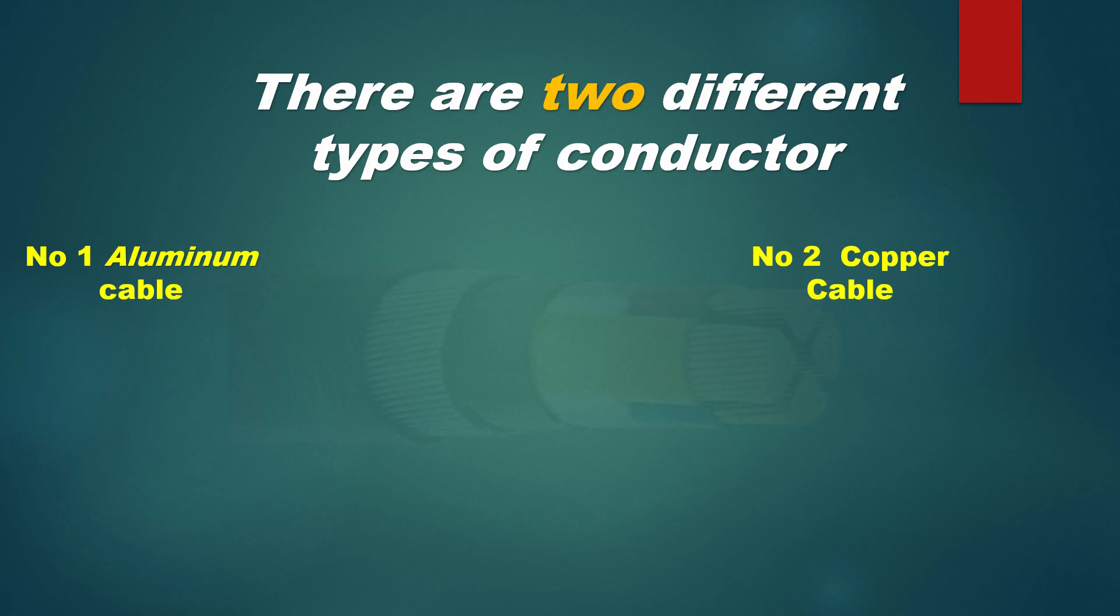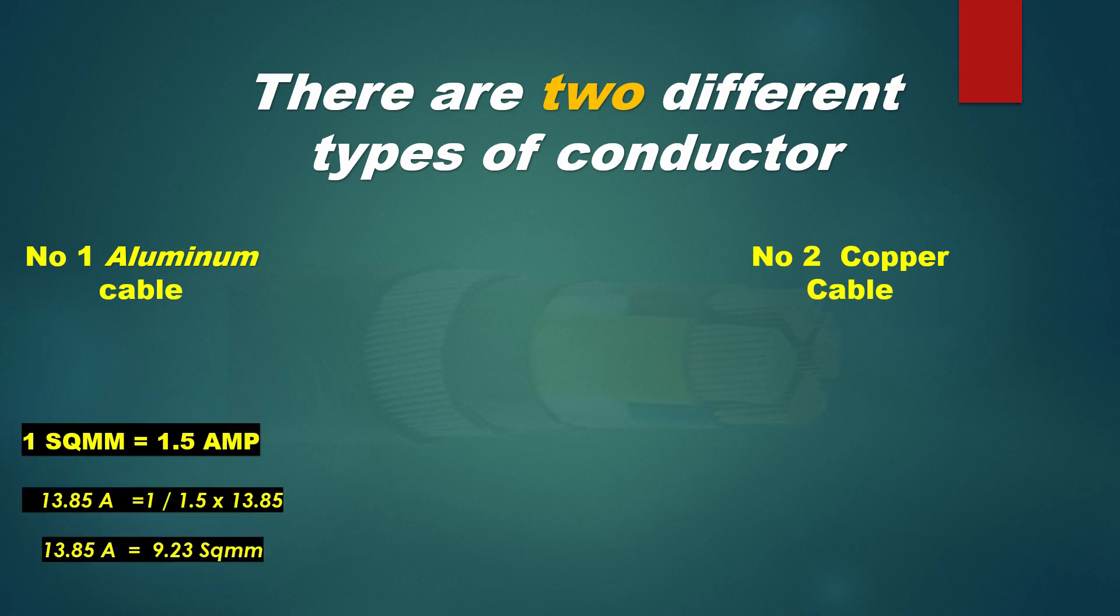According to the thumb rule, per Aluminum cable is 1 square mm, cable carrying capacity is 1.5 ampere. So, the cable size for 13.85 ampere is equal to 1 divided by 1.5 multiplied by 13.85. The answer becomes 9.23 square mm. As it is, according to the thumb rule, for copper cable carrying capacity is 1 square mm is equal to 2.5 ampere.